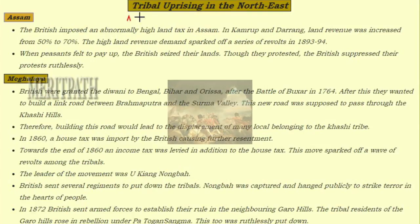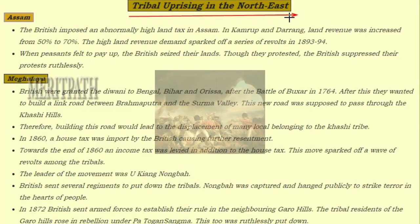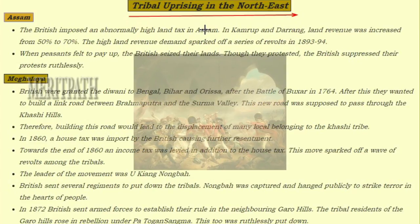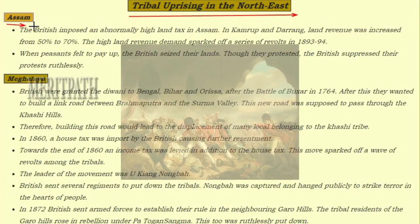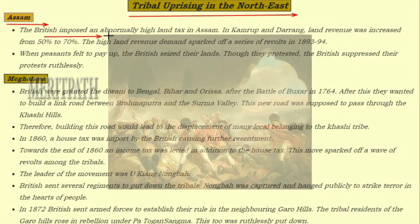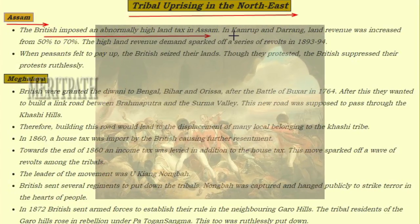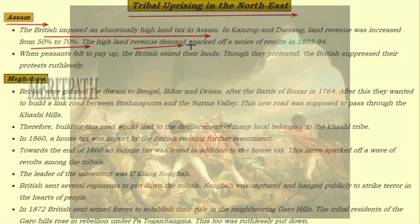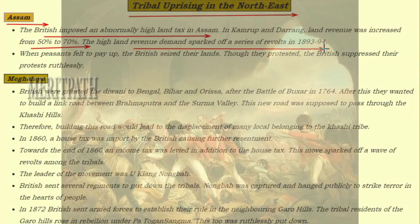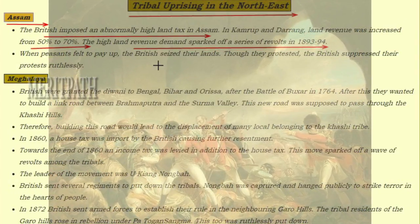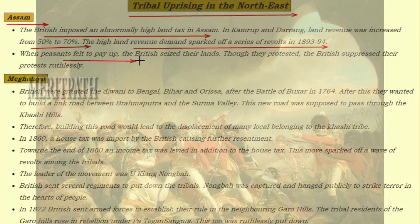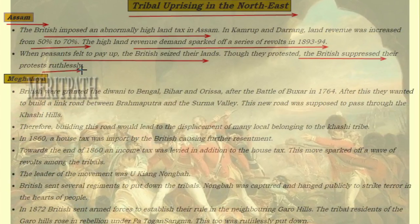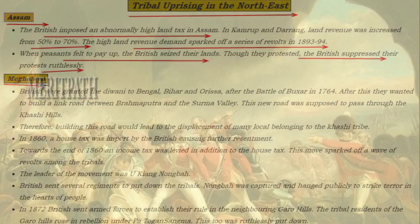Now we are going to learn about the tribal uprisings in the North, discussing three states: Assam, Meghalaya, and Manipur. In Assam, the British imposed abnormally high land taxes of up to 70-72%. This led to a revolt against the British in the period of 1893 to 1894. When the peasants failed to pay, the British seized their lands. Though they protested, the British suppressed their protest ruthlessly.